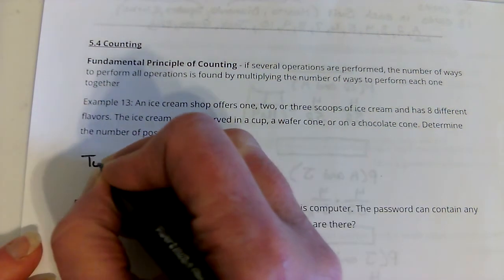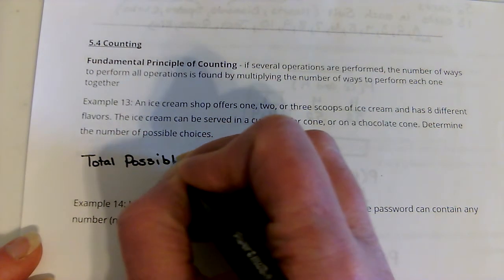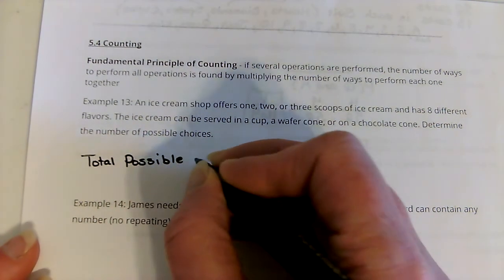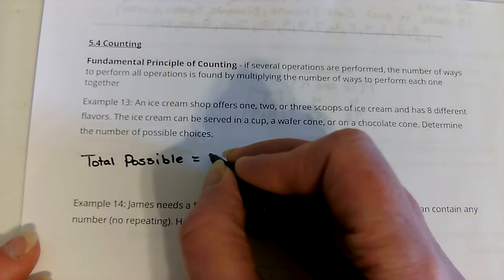So the total possible, we want to know how many combinations we can get. Well, one, two, or three, so there's three ways we can get the scoops.